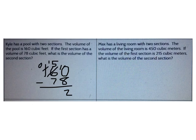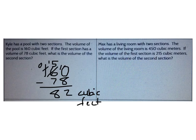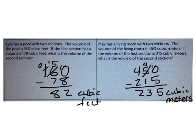The correct answer is 82 cubic feet. Now you try one. Max has a living room with two sections. The total volume is 450 cubic meters. If the first section is 215 cubic meters, the second section is 235 cubic meters. I know the whole and one part, so I subtract to find the other part.